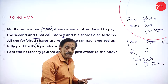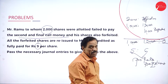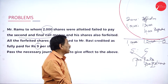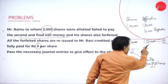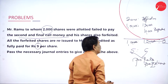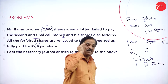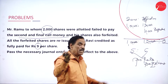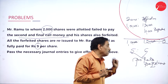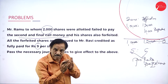We require 1 lakh shares, 1 lakh applications, but we received 1,30,000 applications. 10,000 are rejected, 1,20,000 accepted for 1 lakh shares — pro-rata basis ratio is 5 is to 6. That means for every 5 shares, we require 6 applications: 10 shares need 12 applications, 15 shares need 18 applications. Minimum 5 shares require 6 applications. This is called pro-rata adjustment.